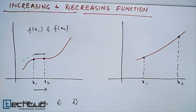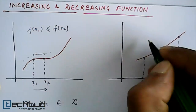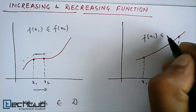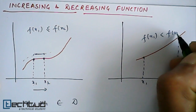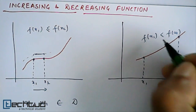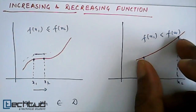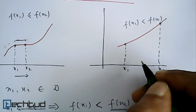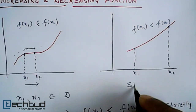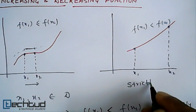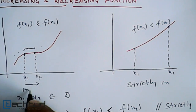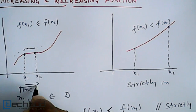We have two examples here. For x1 and x2, in this function f(x1) will be less than or equal to f(x2), whereas in this function f(x1) will be less than f(x2) — equal to will not occur, it will always be strictly less. So this is a strictly increasing function, and this one is just increasing, not strictly increasing.